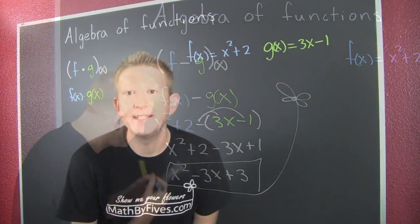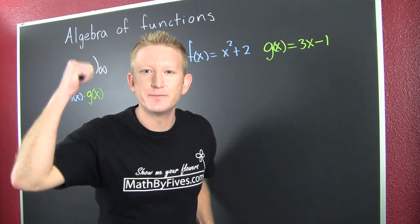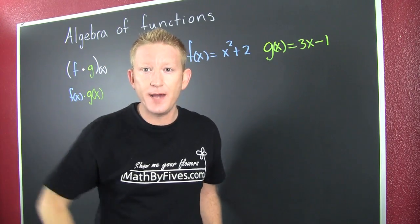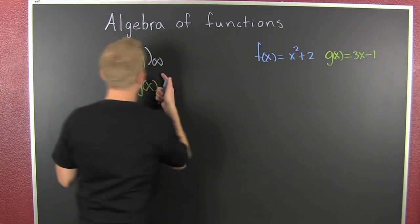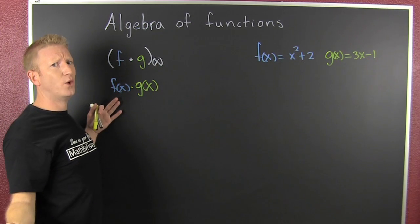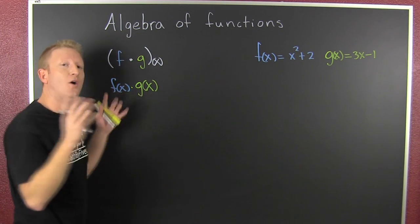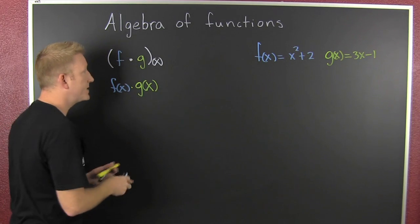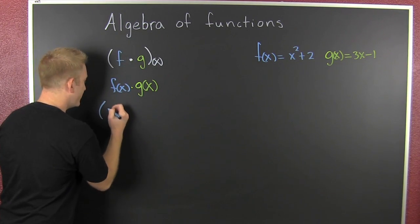This is my note on notation. What are we gonna do? Add them, subtract them, multiply them, and divide them. This is how we write the multiplication. This says f times g of x. What does it mean? It means f(x) times g(x). What comes next? A little substitution.